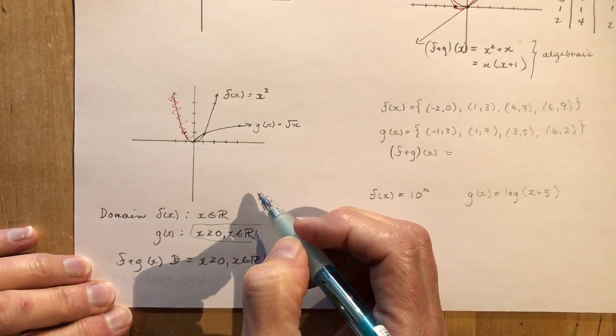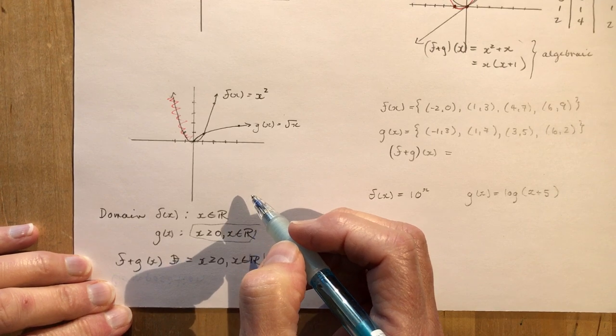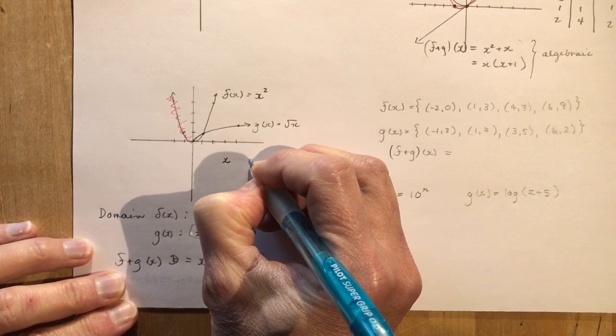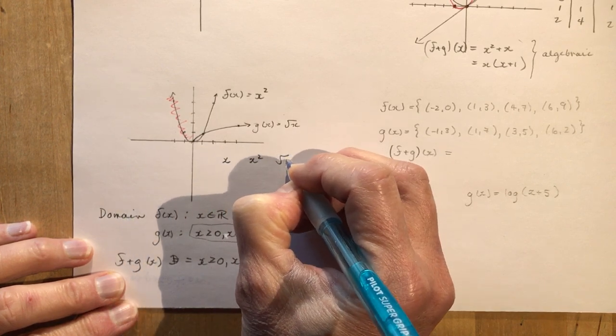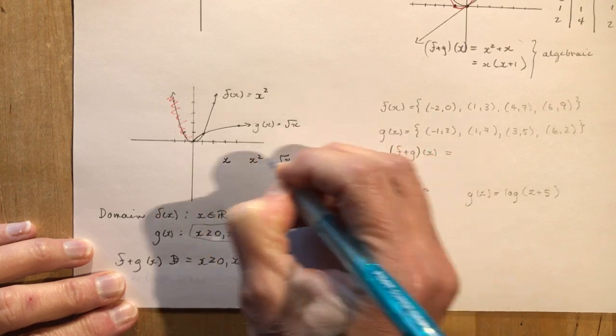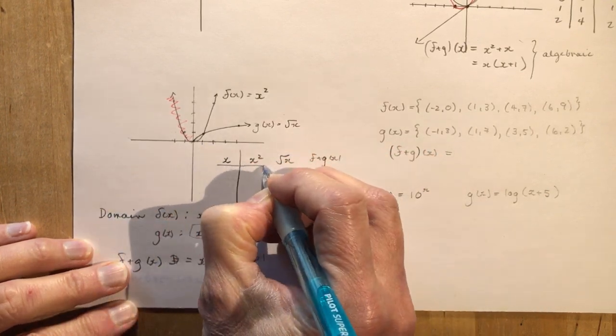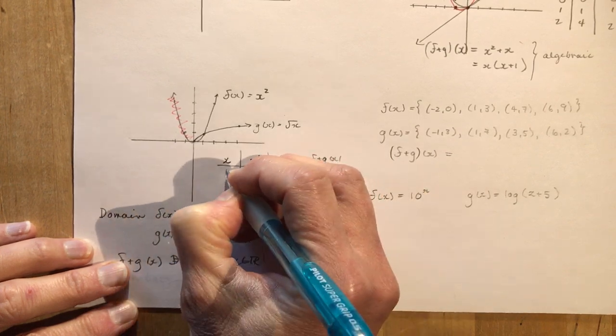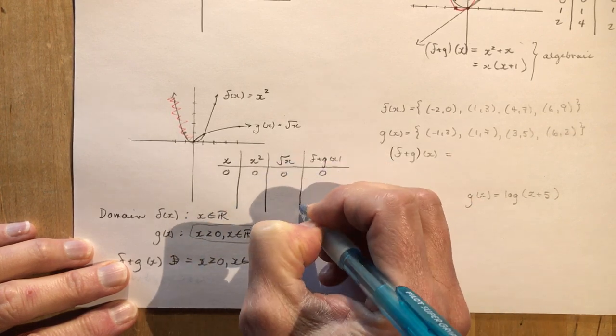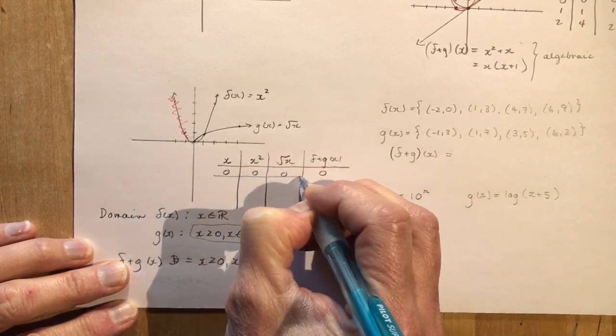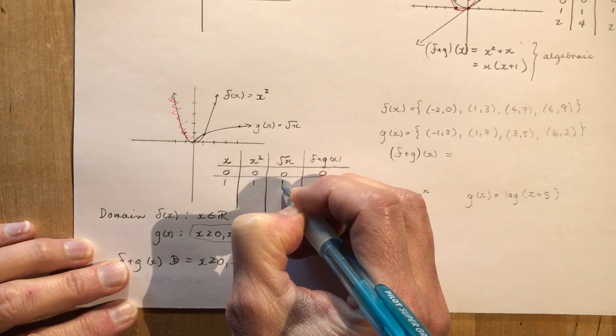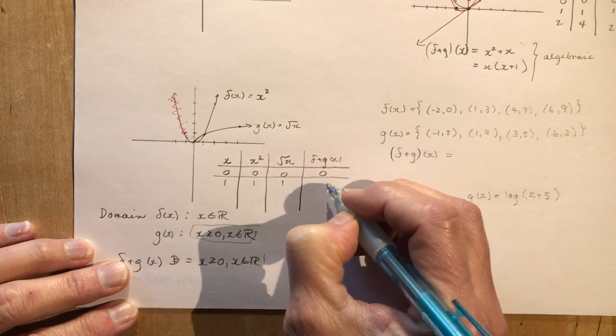Now you could go through and find some values for x. Let's make a quick little table of values here. We'll have x, x squared, root x, and then f plus g at x. We know our domain has to start at zero, so lots of zeros going around there. And if I put in x is 1, I would get 1. Square root of 1 is 1. And 1 plus 1 would be 2.